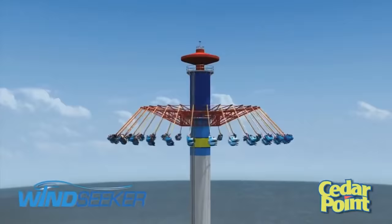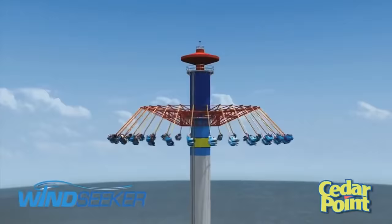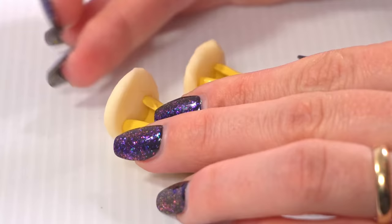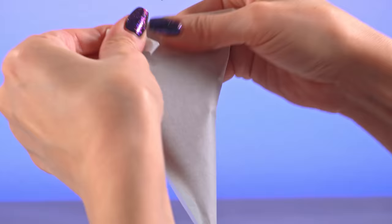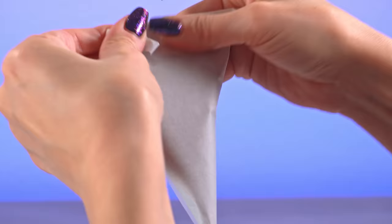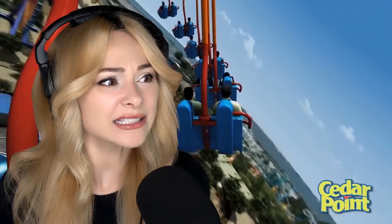Windseeker is an amped-up swing ride. You sit in these like suspended swing-like seats and slowly rotate around a central tower. This type of ride has been around forever. It's very common. It's not very fast, and kids like it. But like I said, this is an amped-up version. So you actually go 301 feet in the air. It's pretty high.